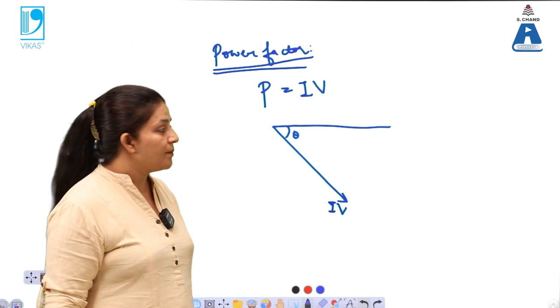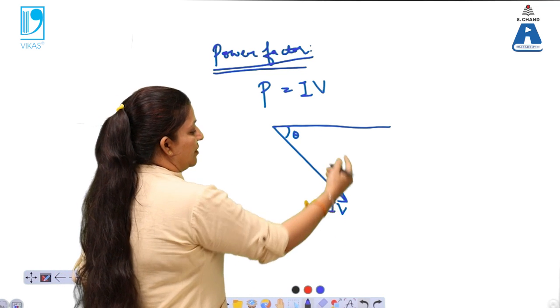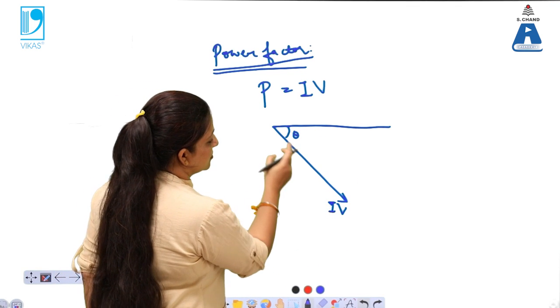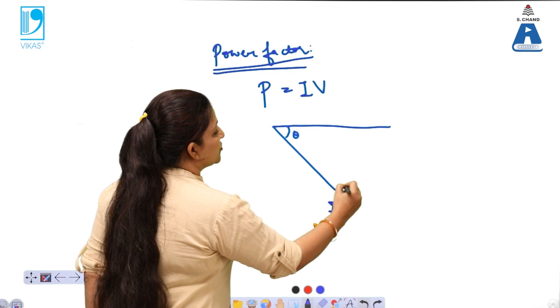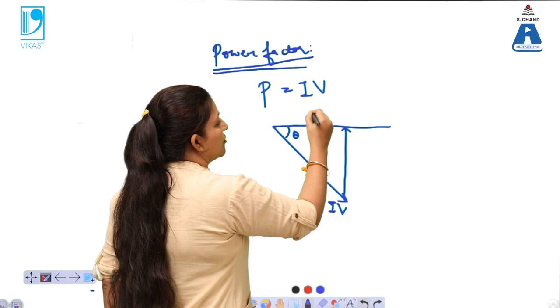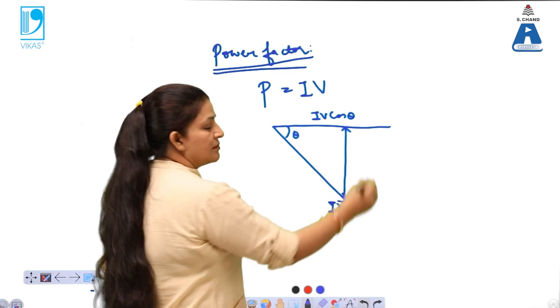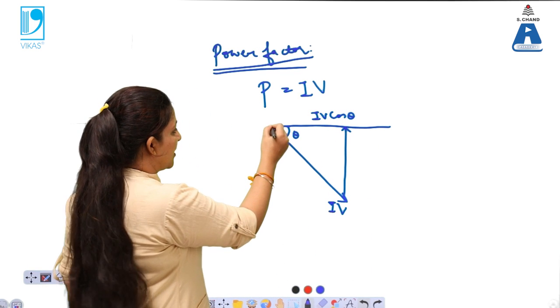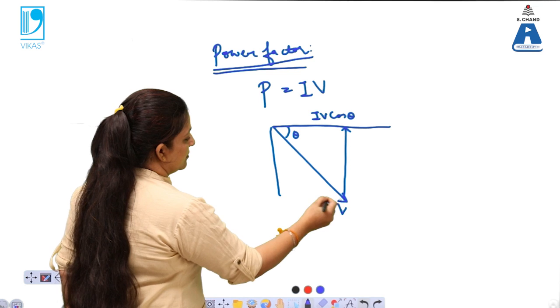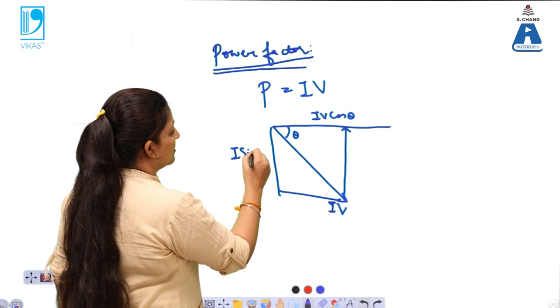Now we want to calculate the power factor. The IV along this direction, its projection along the X axis will be equals to IV cos theta and its vertical projection will be IV sin theta.